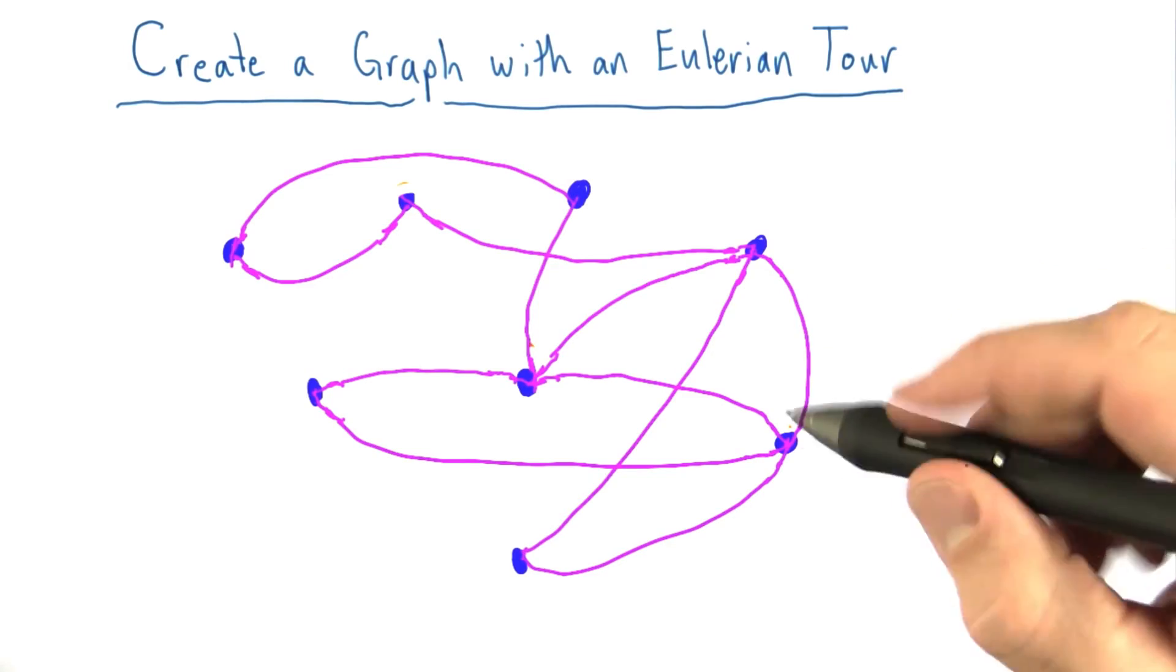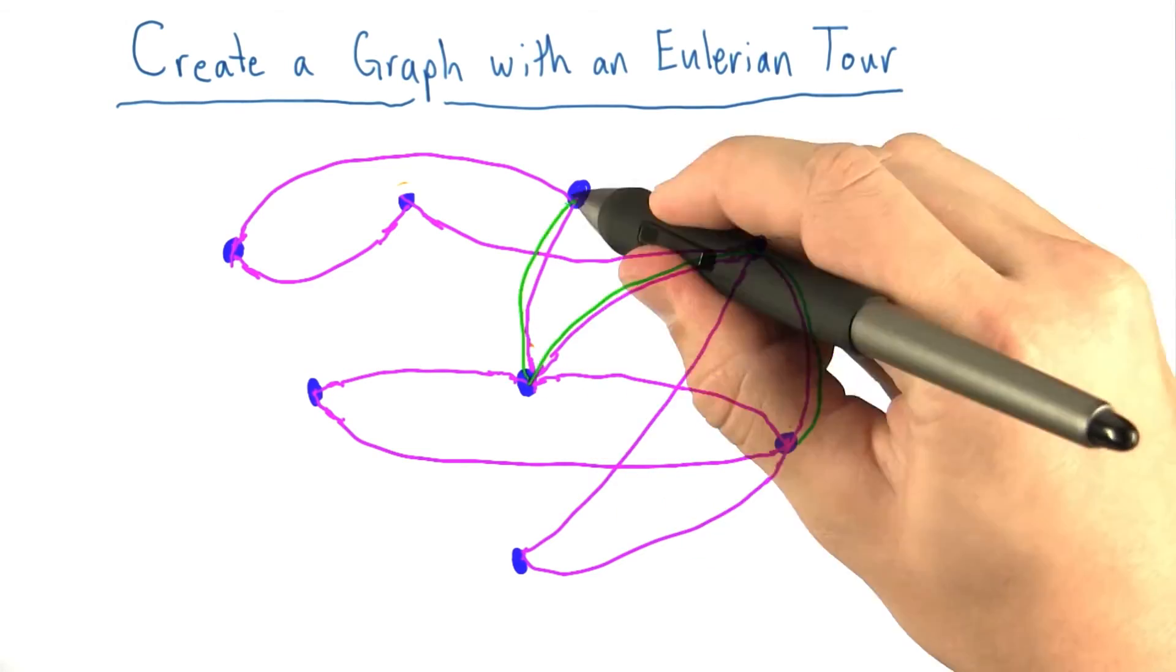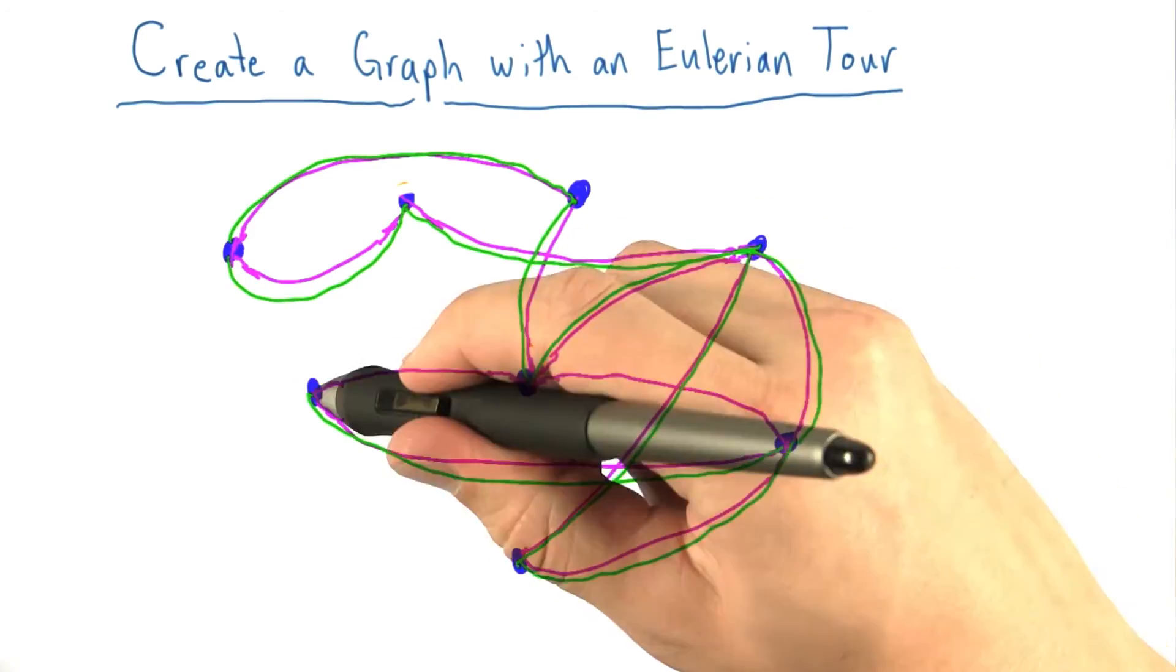Just to verify that there's an Eulerian tour, we can go through here, over to here, connecting up with this guy, and there.